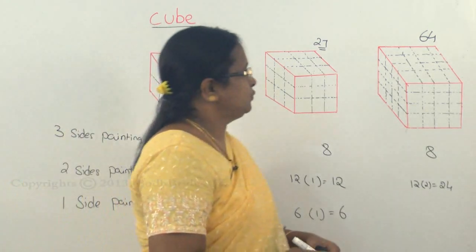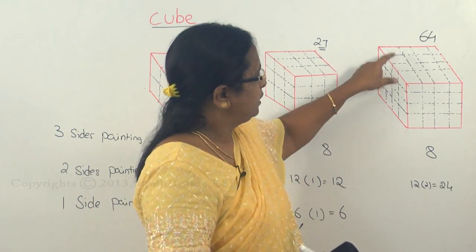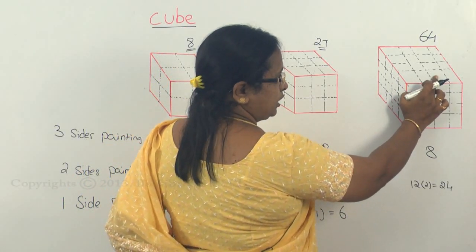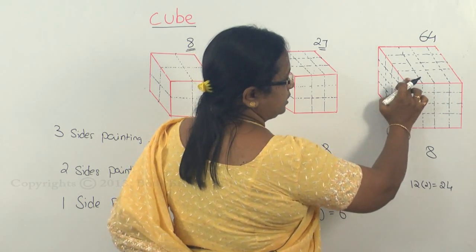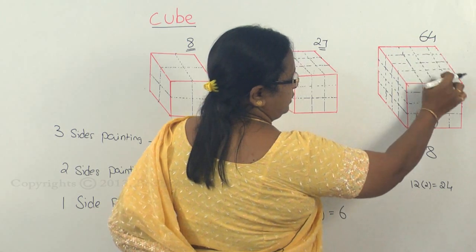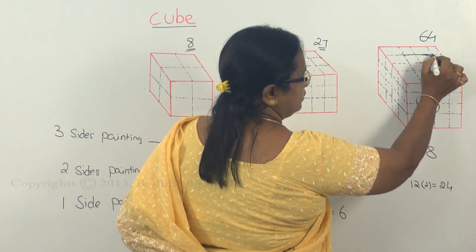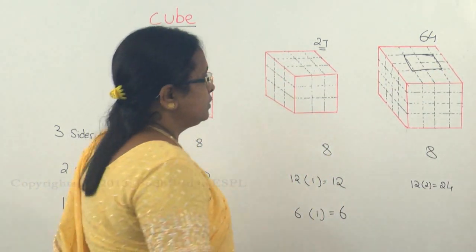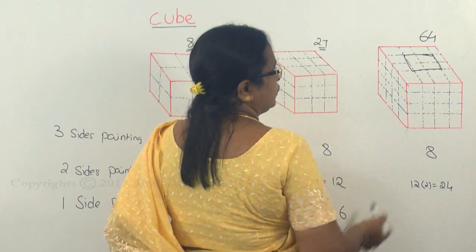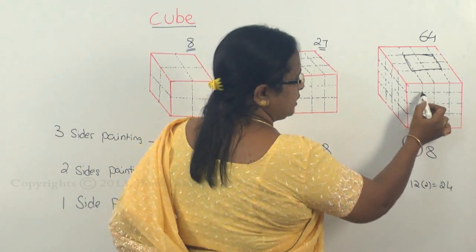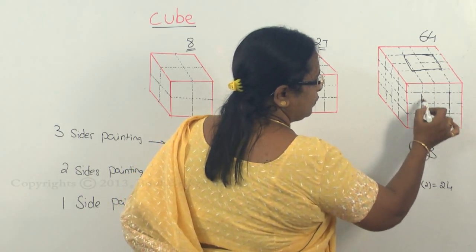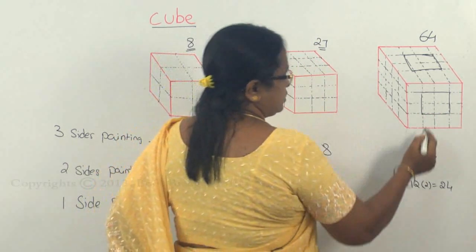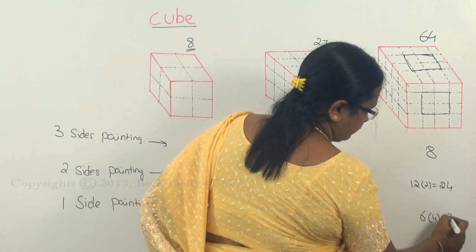For the 64-cube case, in each face you have to leave out the cubes on the edges — those on the edges are two-sided painted and corners are three-sided painted. What is left out is the inner part of the face, which is one-sided painted. For each face you are going to have four such cubes. So with six faces into four, you are going to have twenty-four one-sided painted cubes.